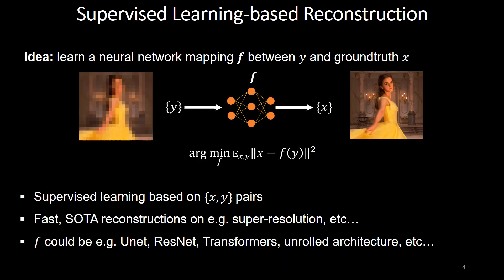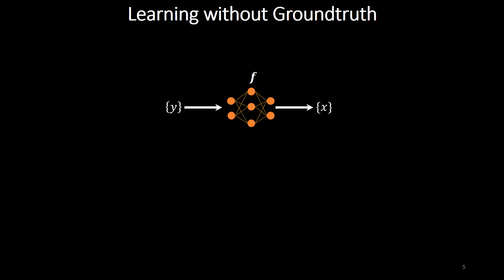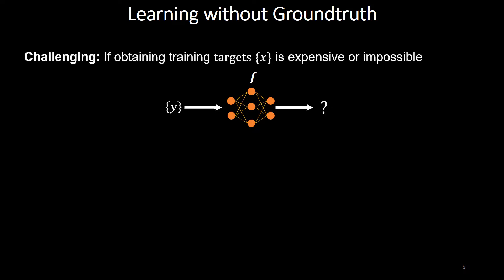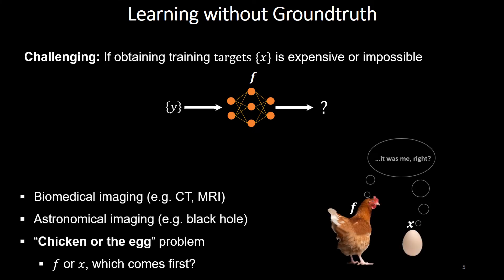We already know that state-of-the-art techniques can solve many inverse problems using advanced neural networks with supervised learning on x and y pairs, but the problem is that training samples may be expensive or impossible to get, which is very often the case in biomedical imaging or astronomical imaging. This raises the chicken-and-egg problem: I need my ground truth data to learn f, but I need f to reconstruct x.